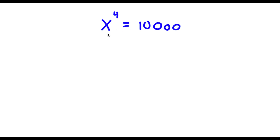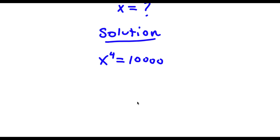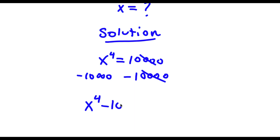Alright, so I have x to the power of 4 is equal to 10,000, and I want to find the value of x. For my solution, first start with x to the power of 4 is equal to 10,000. I'm going to subtract 10,000 on both sides, so these two cancel out and now I'm left with x to the power of 4 minus 10,000 is equal to zero.